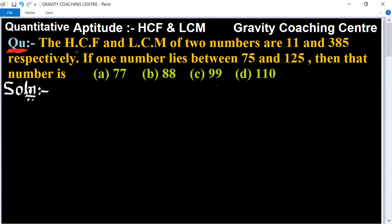In this question, HCF and LCM are given as 11 and 385, and one number lies between this range. So what is this number? First, let the two numbers be...